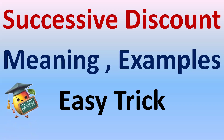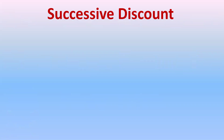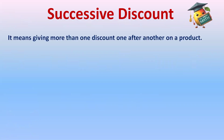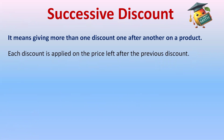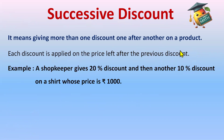What is successive discount? Successive discount means giving more than one discount one after another on a product. Each discount is applied on the price left after the previous discount. Let's understand this with the help of an example.